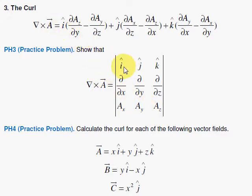So if we have i-hat, we take the partial of Az with respect to y, and then subtract it with the partial of Ay with respect to z.